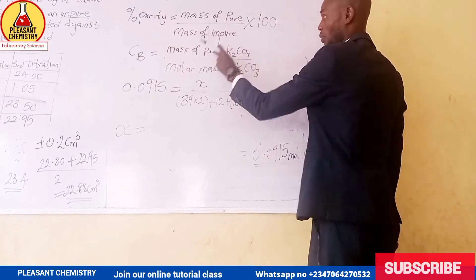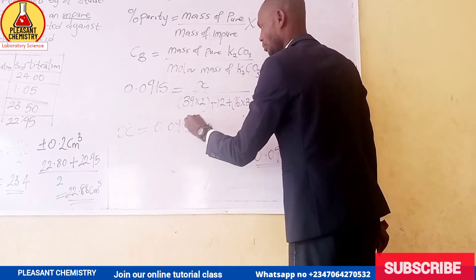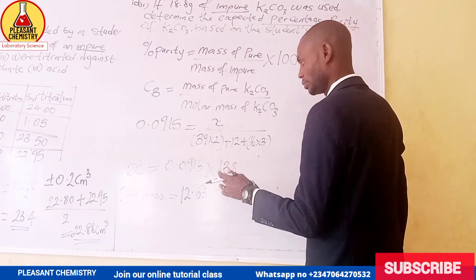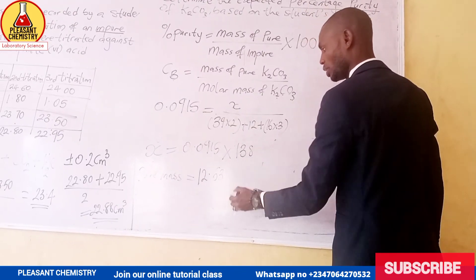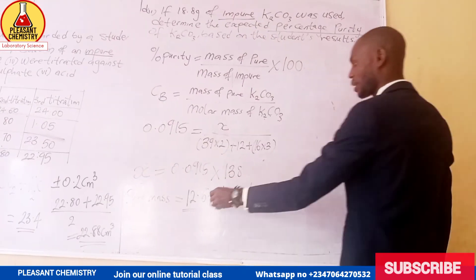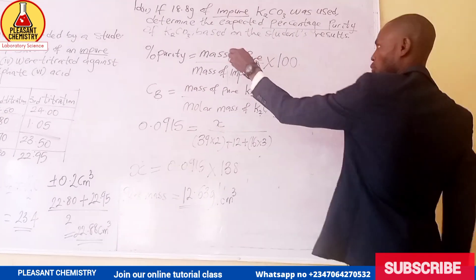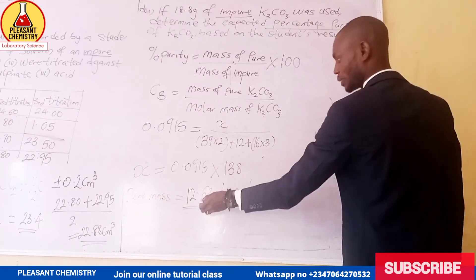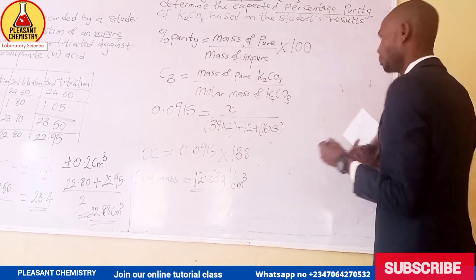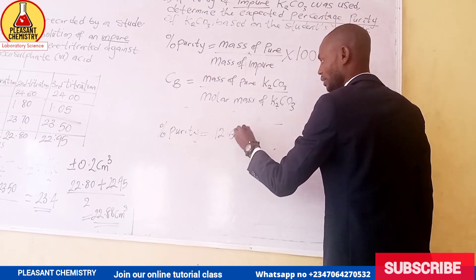We cross multiply to get the moles of pure K₂CO₃. Using moles × molar mass: 0.0915 multiplied by the molar mass of K₂CO₃. When you do this calculation correctly, you get the pure mass to be 12.68 grams. Please make sure you use the correct unit — grams. Now that we have calculated our pure mass, we substitute it into the percentage purity formula. The pure mass is 12.68 grams over the impure mass.